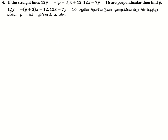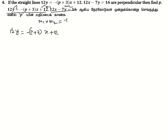We have two lines, each giving us one slope — m1 and m2. For the first line, 12y = (-p + 3)x + 12. Dividing both sides by 12, y = ((-p + 3)/12)x + 1. Comparing with y = mx + c, the slope m1 = (-p + 3)/12.